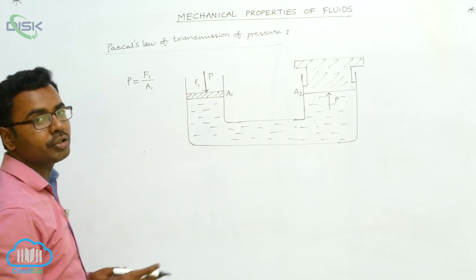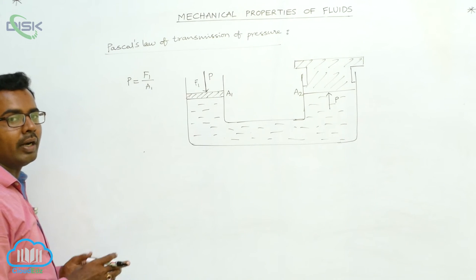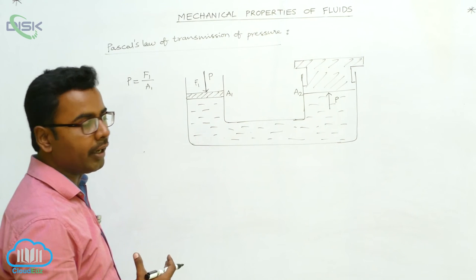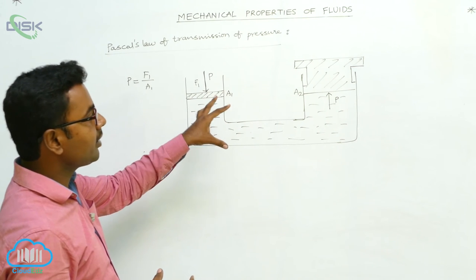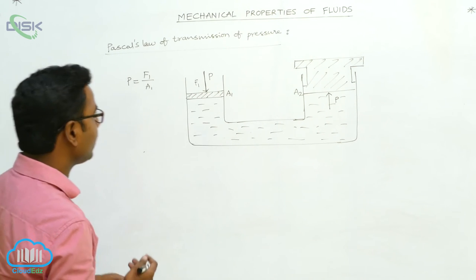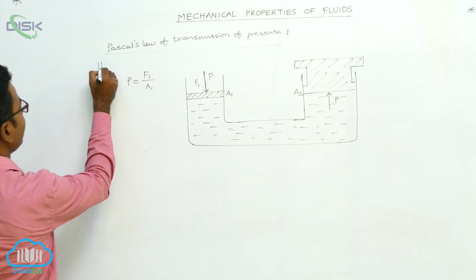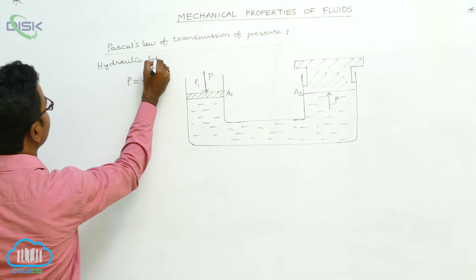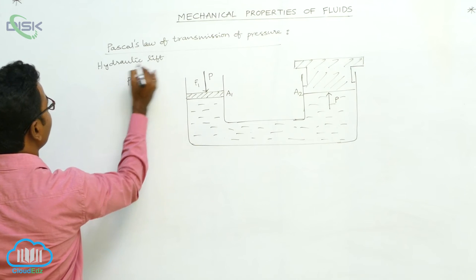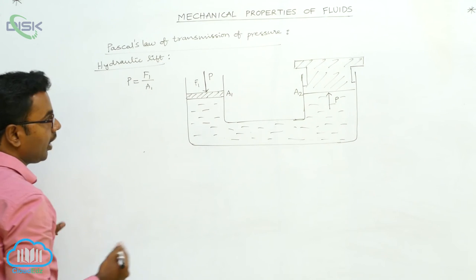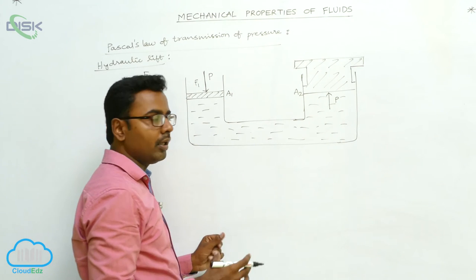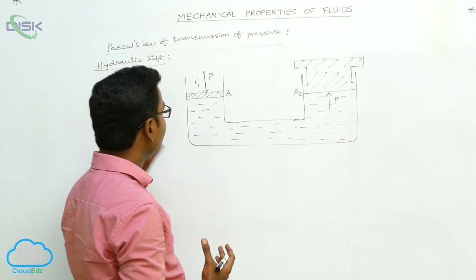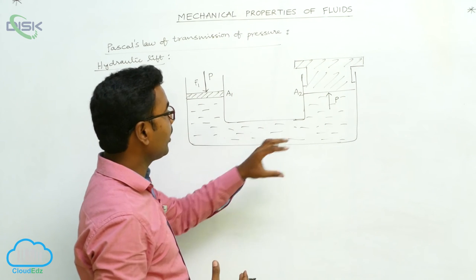Based on this principle, hydraulic machines work. There are two types: the hydraulic lift and the hydraulic brake. Hydraulic lifts are used to lift heavy objects like a car or a lorry.